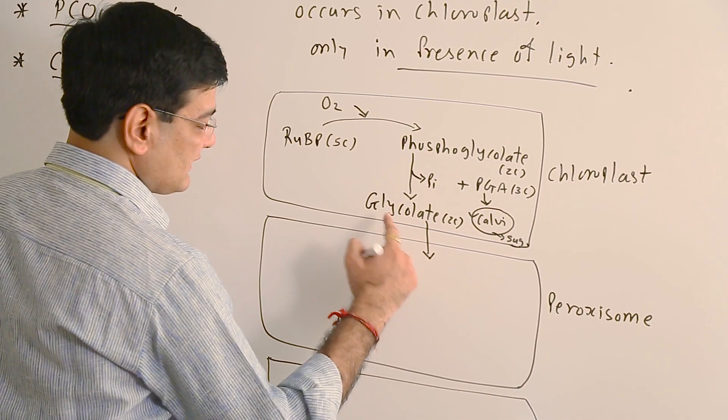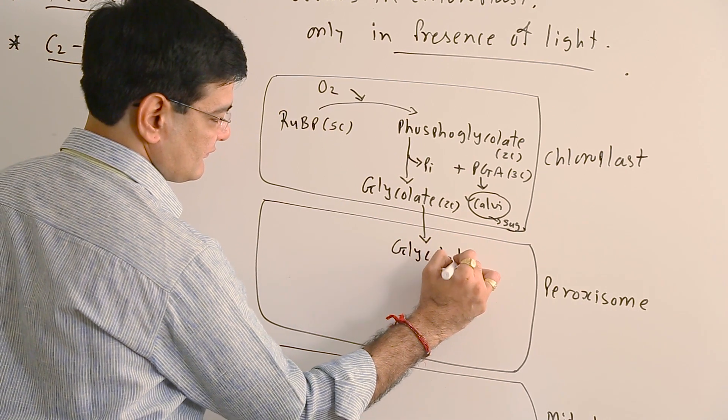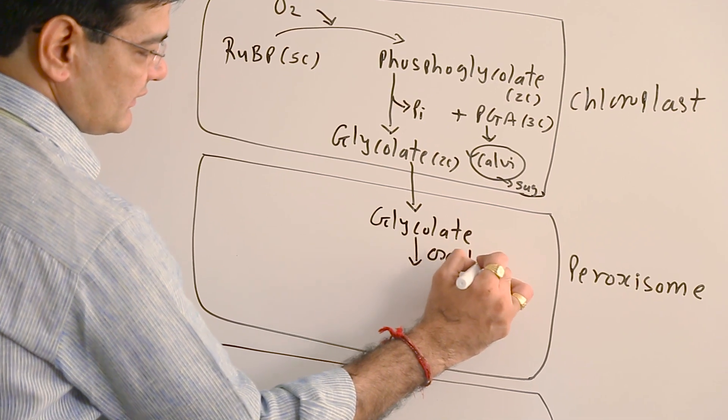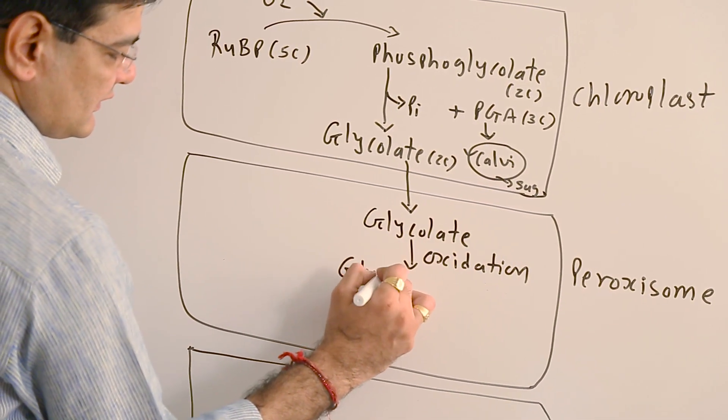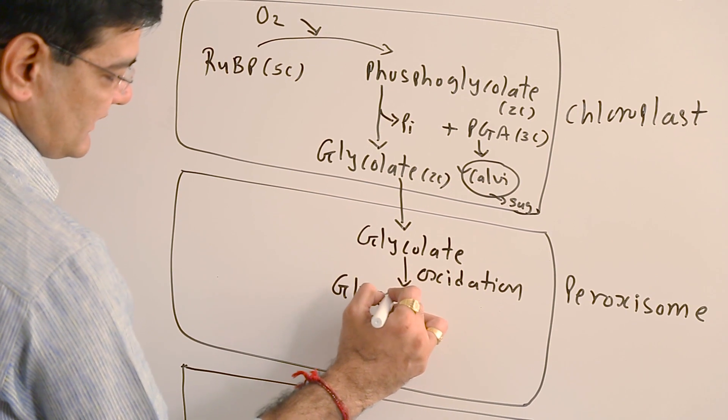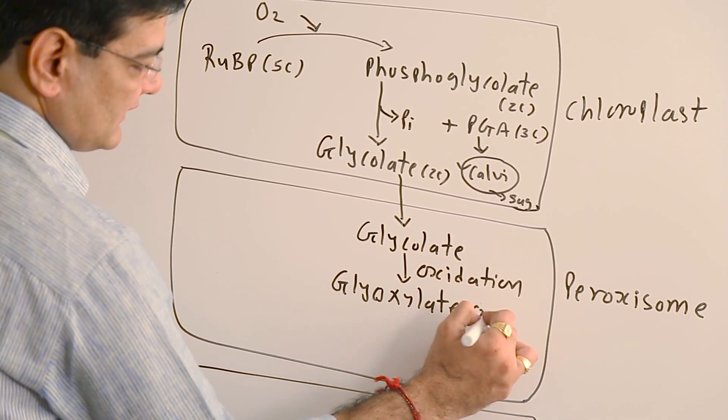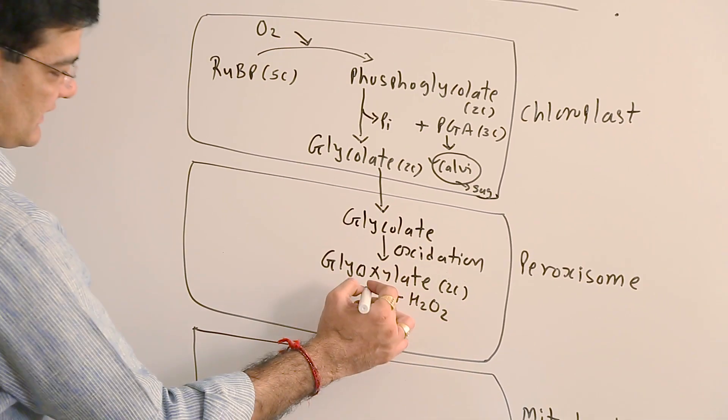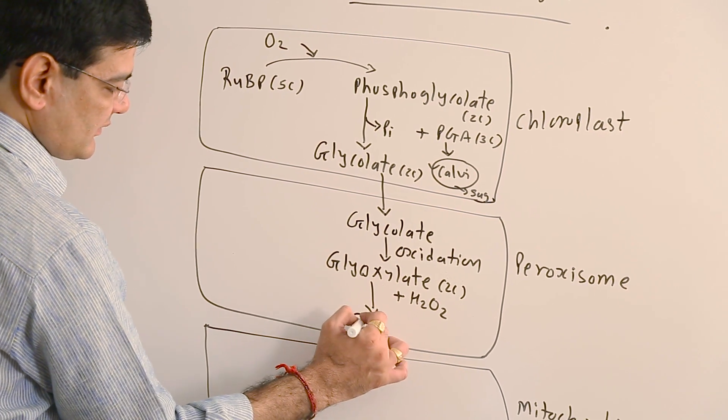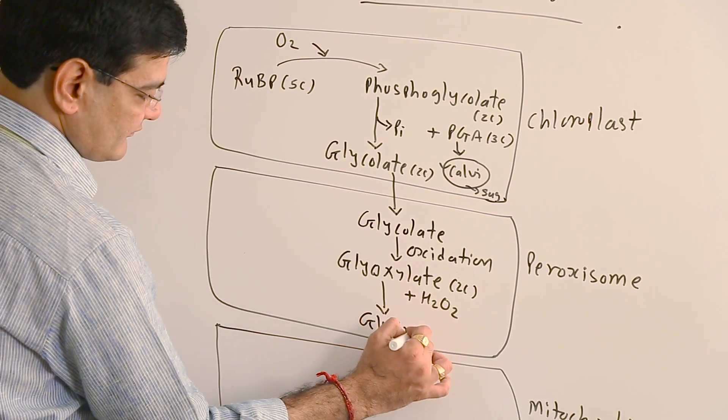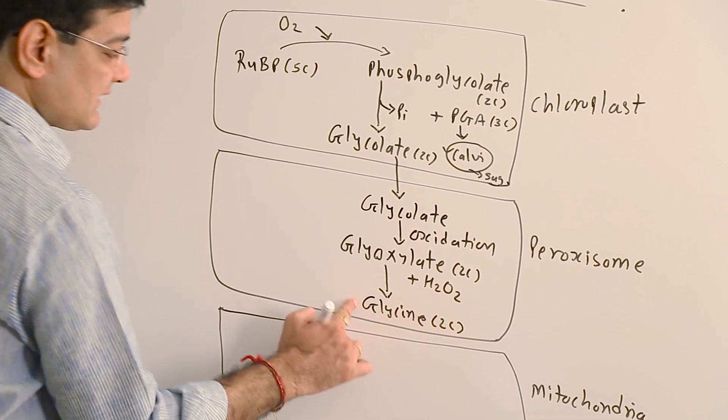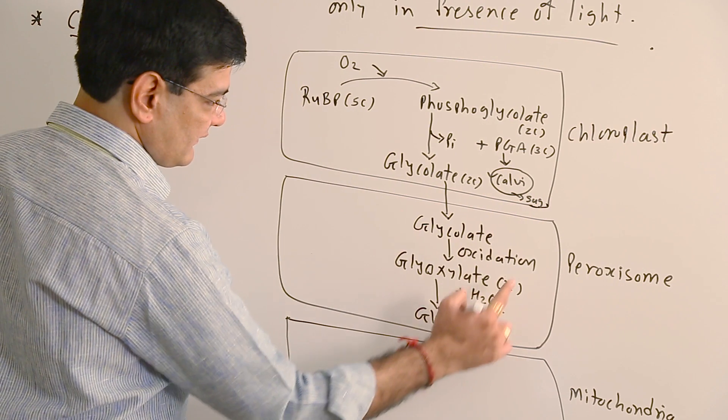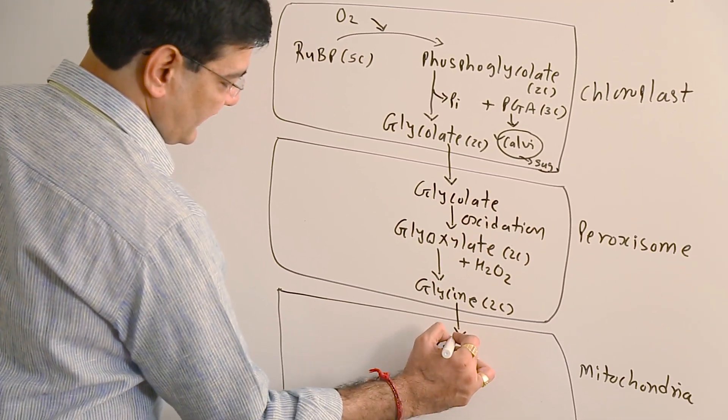This glycolate enters into the peroxisome and undergoes oxidation to form glyoxylate. This glycolate reacts with hydrogen peroxide, that is a strong oxidizing agent, and glyoxylate gets transformed into glycine. This glycine contains two carbons and it is an amino acid. This glycine diffuses out from the peroxisome and enters into the mitochondria.